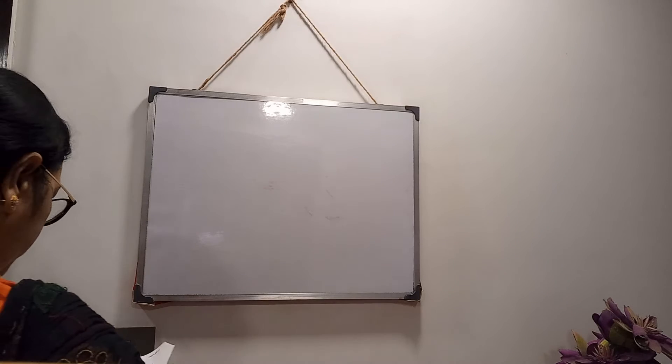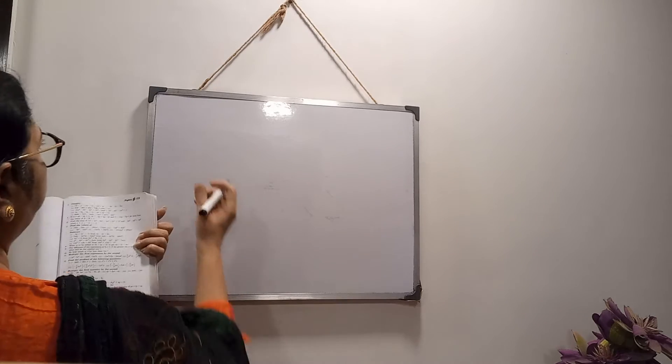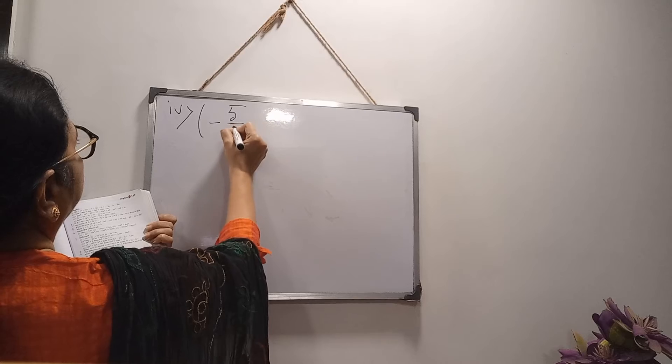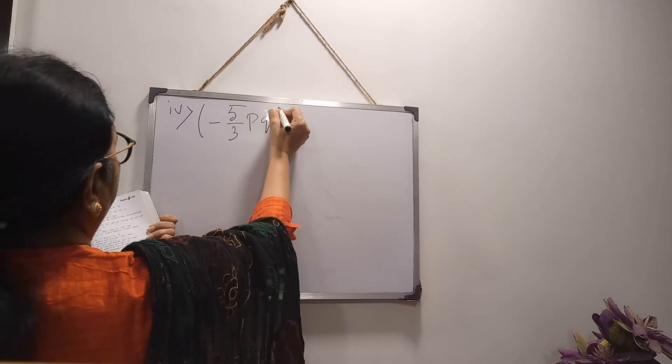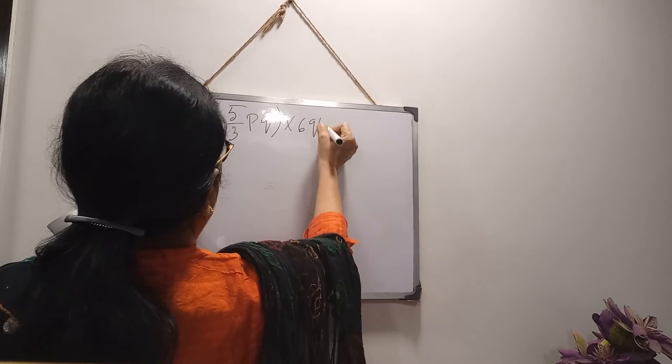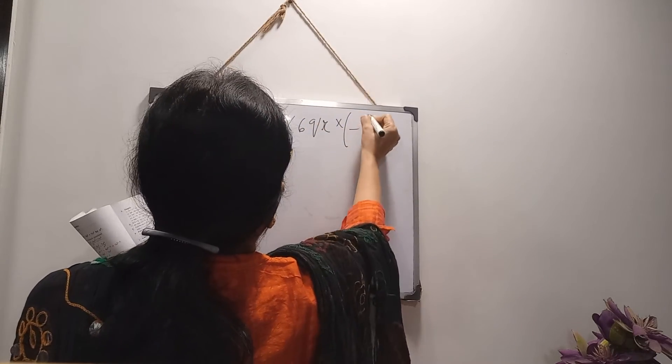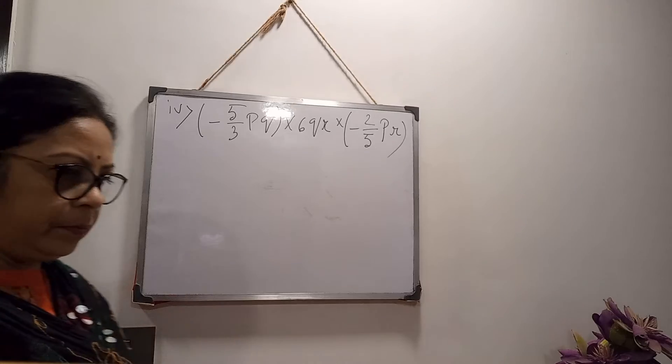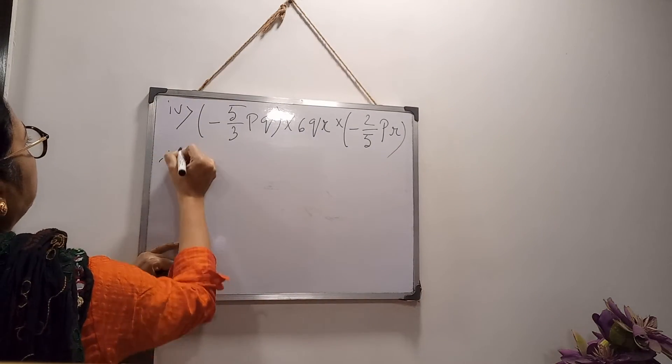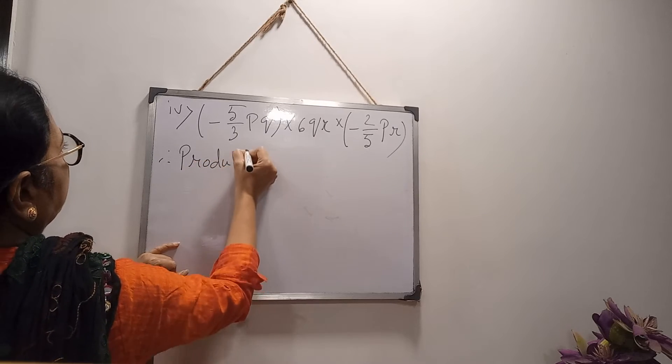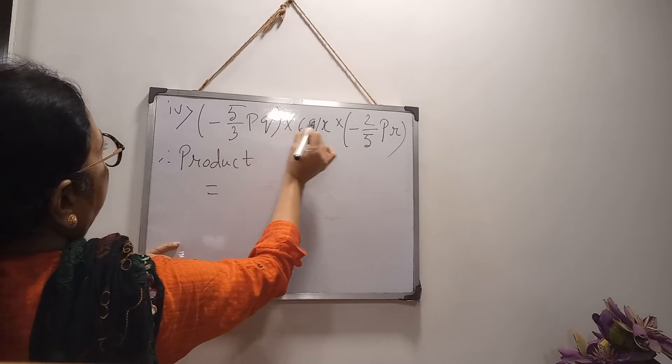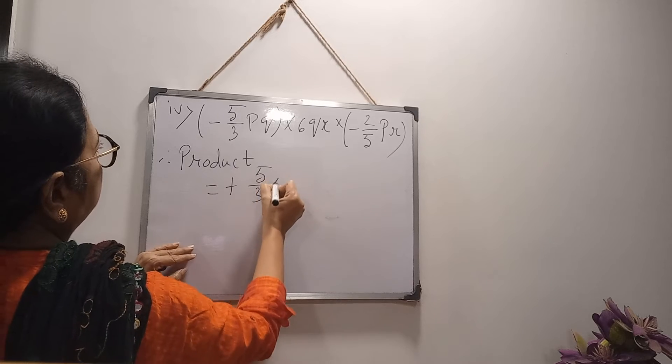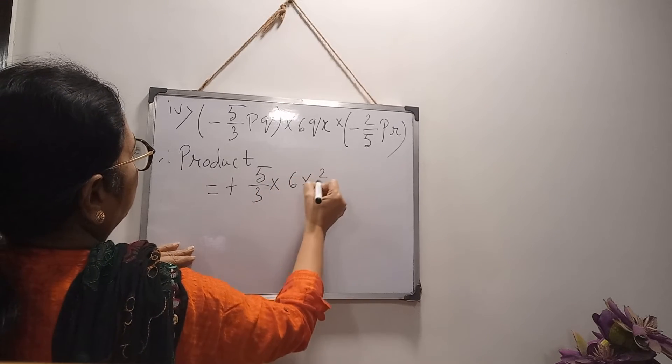Another one, same type. Number 4, again there is fraction. Minus 5 by 3 PQ. Here variables are PQ and R. 6QR square, minus 2 by 5 PR. Therefore product, minus plus minus, so minus plus minus, minus minus plus. Now fractions, write down together. 5 by 3, 6, 2 by 5.